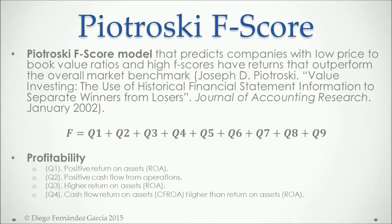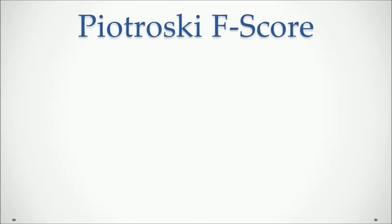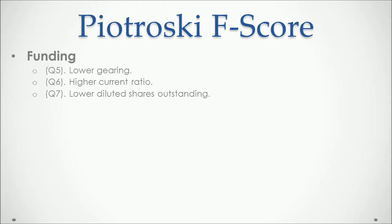The next three questions are related to funding. Question five: if gearing, which is debt to assets of the current period, is greater than last period, we score zero; if not, one — meaning that less gearing is better. Question six: if the current ratio of the current period is higher than last period, we score one; if not, zero. Question seven: if diluted shares outstanding of the current period are greater than last period, we score zero; if not, one — more outstanding shares is considered negative.